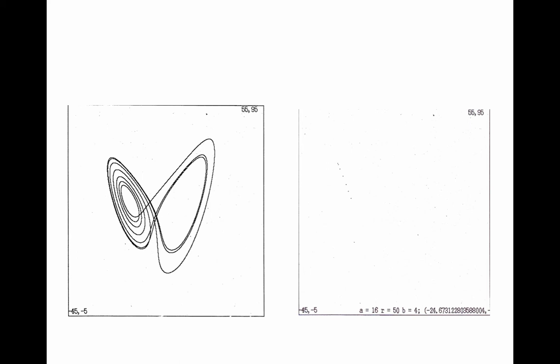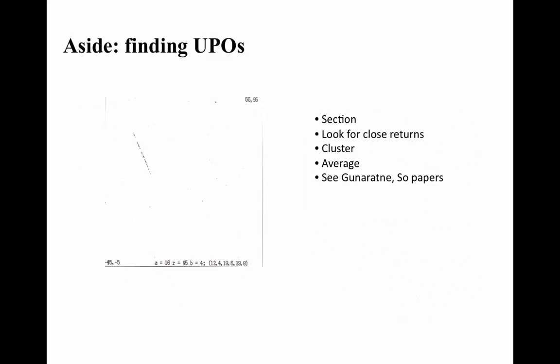Sections play a role in the algorithms that we use to find unstable periodic orbits. I'm just going to sketch this. If you want to code it up, you can look at the papers by Gunaratne and So that I'll put on the supplementary materials page. But here's the idea. You take your trajectory of your chaotic attractor and you slice. And then for every one of those points, you look for close returns. That is, you look for points that came back really close. And those might have been visits to an unstable periodic orbit. Then you cluster like points and you average.